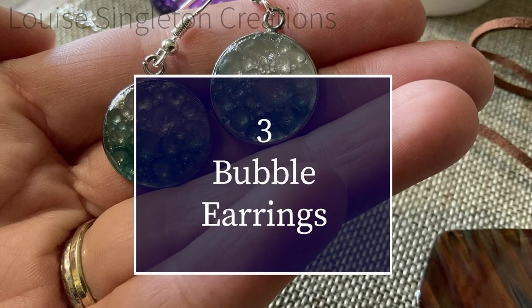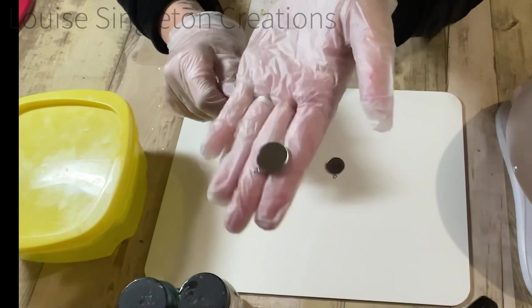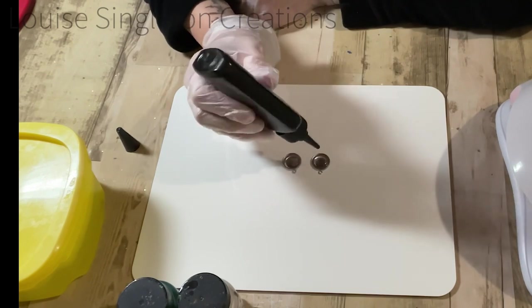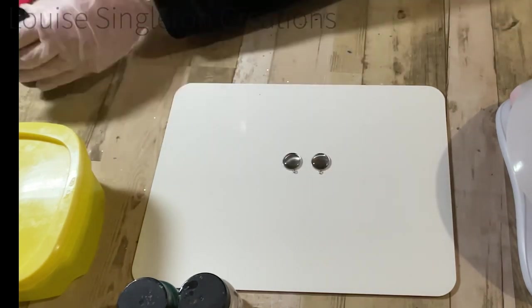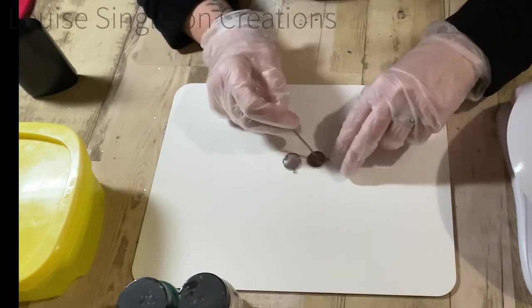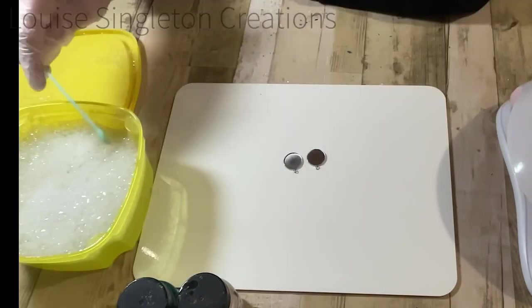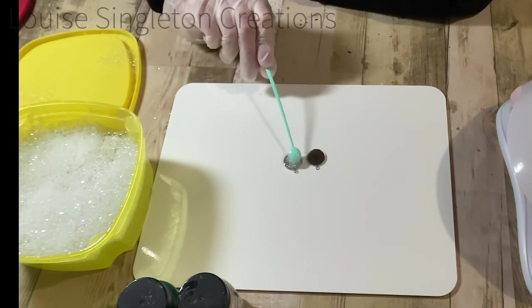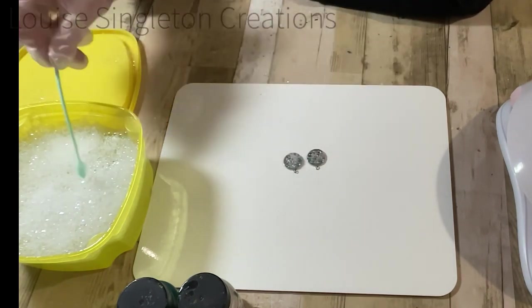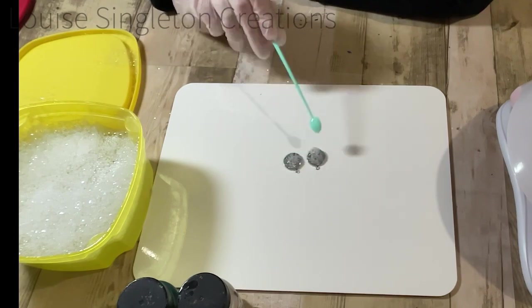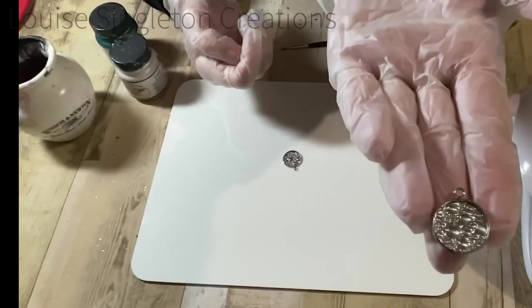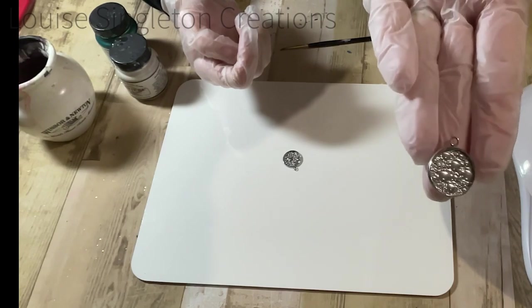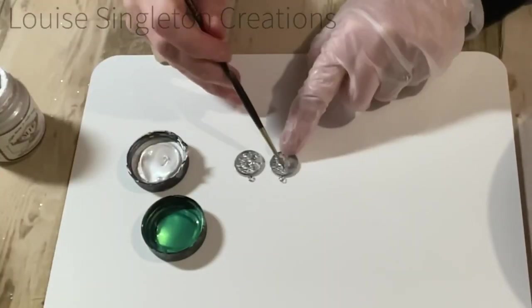Number three: bubble effect earrings. Whilst I still had my bubbles out from the previous project I decided to just have a really quick go at making these earrings. They were the quickest of all my projects—they were done in a matter of five minutes. I just found two round bezels from my jewelry supplies, added some of the J-Diction UV resin and put the bubbles on top just like before, then cured it under the lamp. You can see just how nicely the UV resin picks up the texture of the bubbles so well.